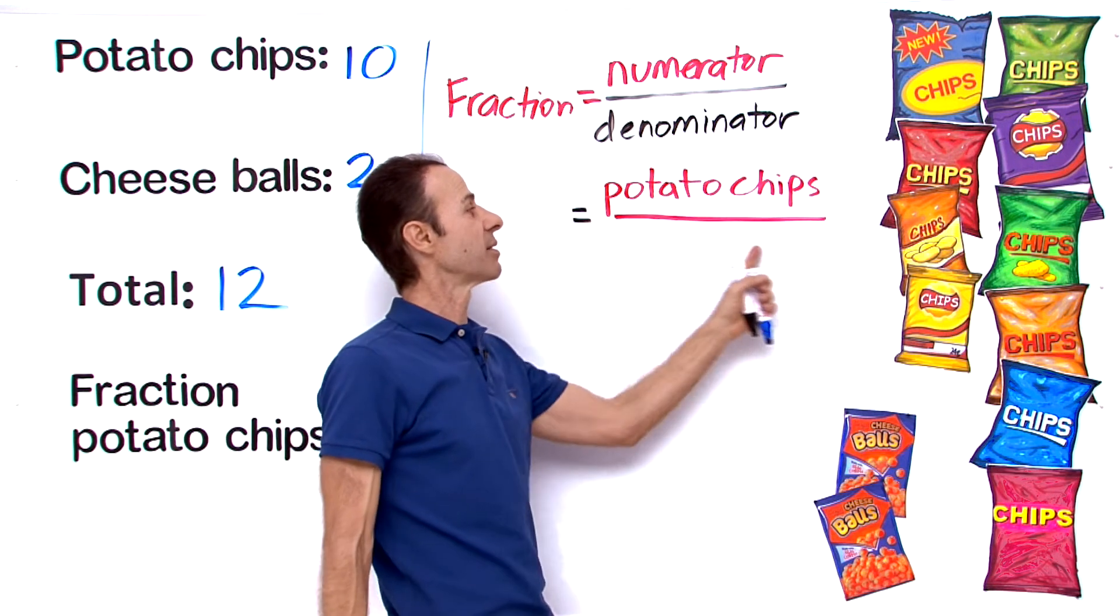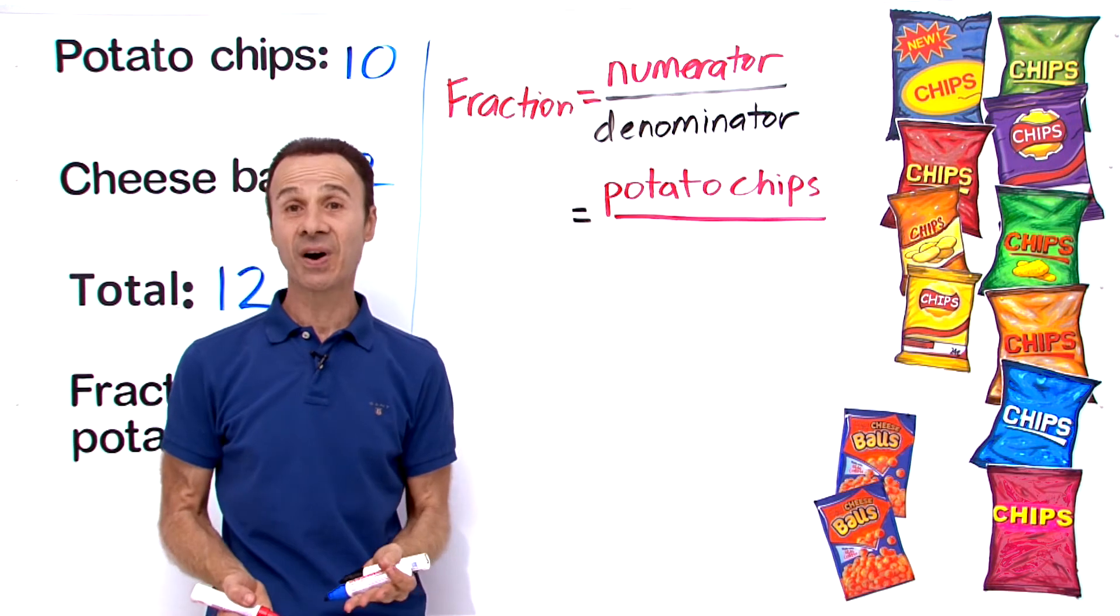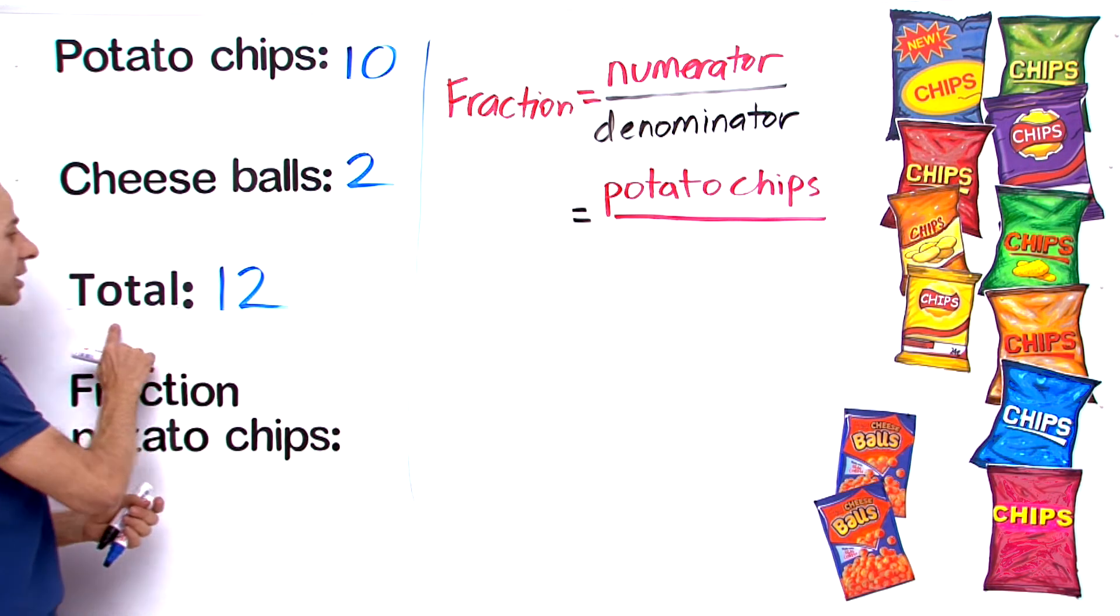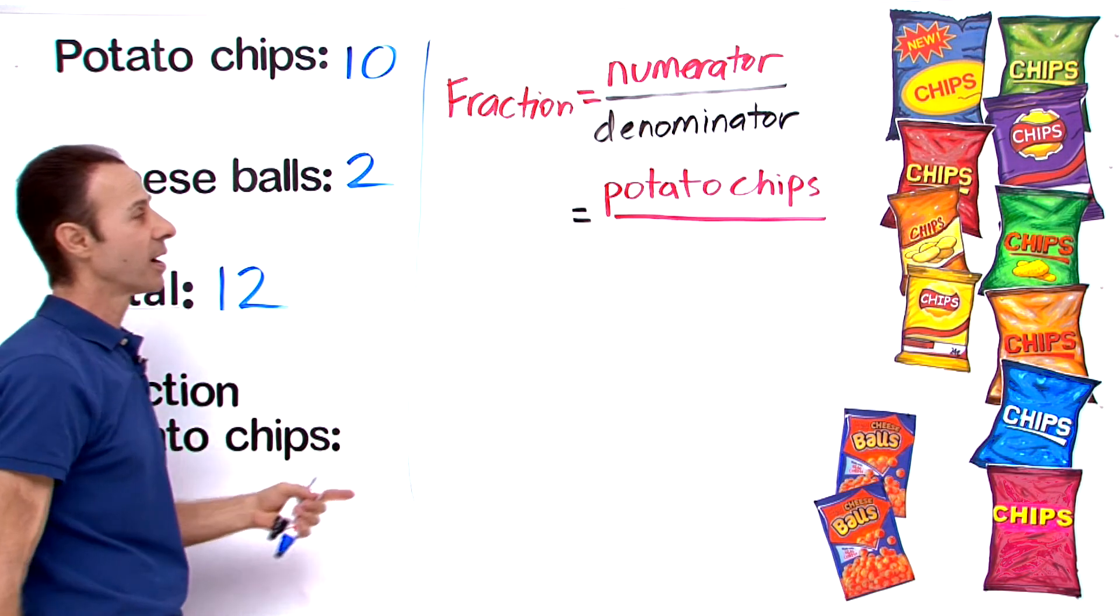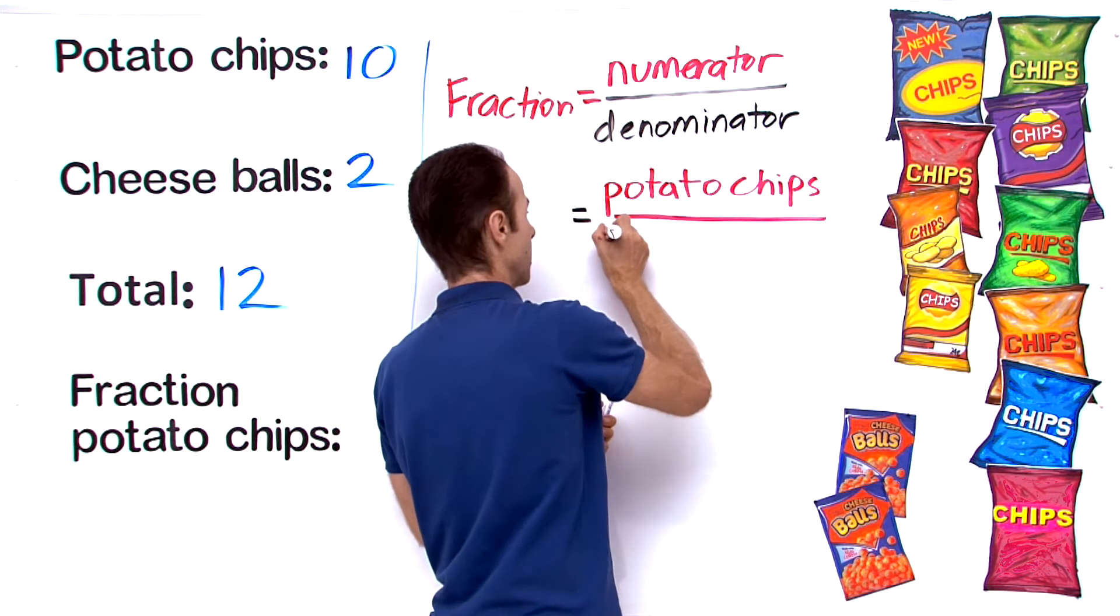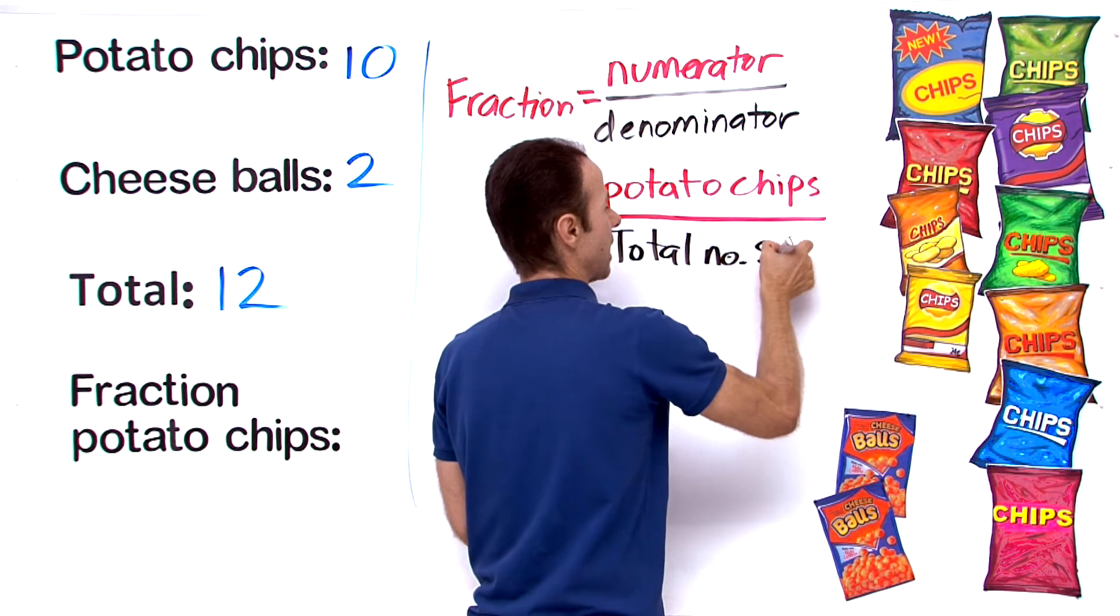Now denominator, what do we put down there? Denominator is the total that the whole is divided into. So what is the total number of snacks? The total number of snacks is 12, right? So the total number of snacks.